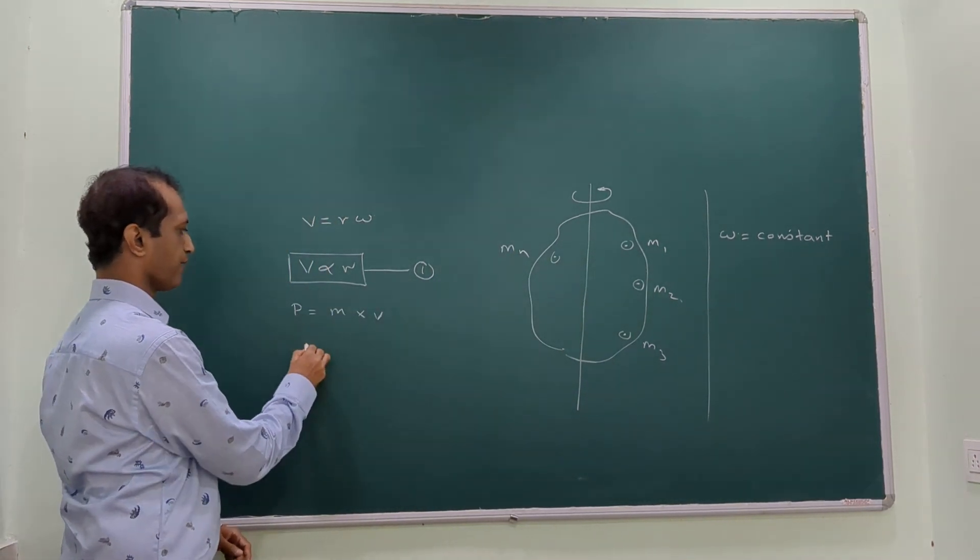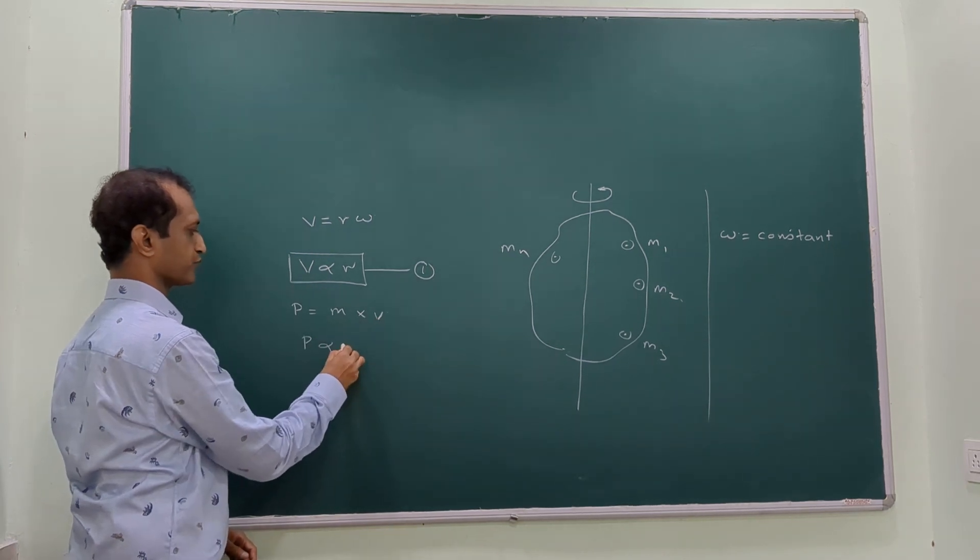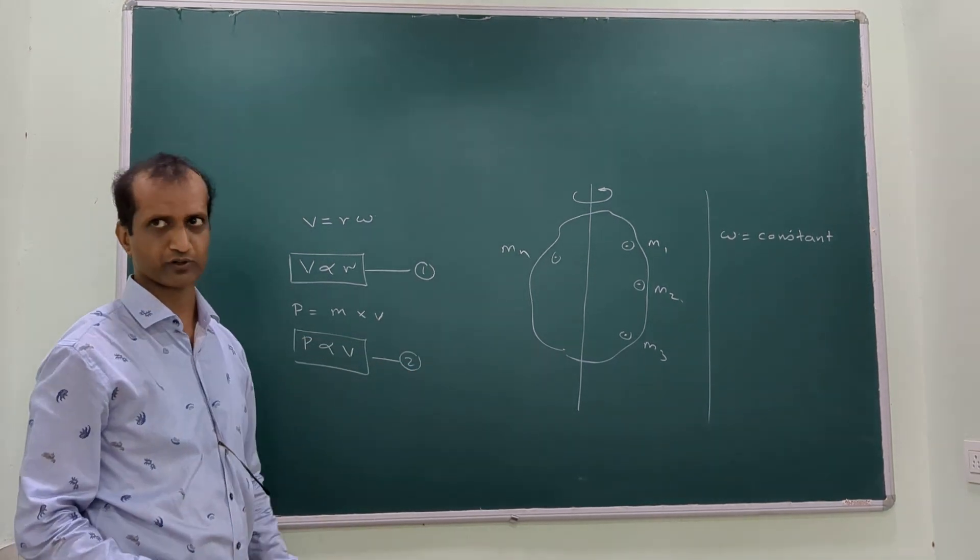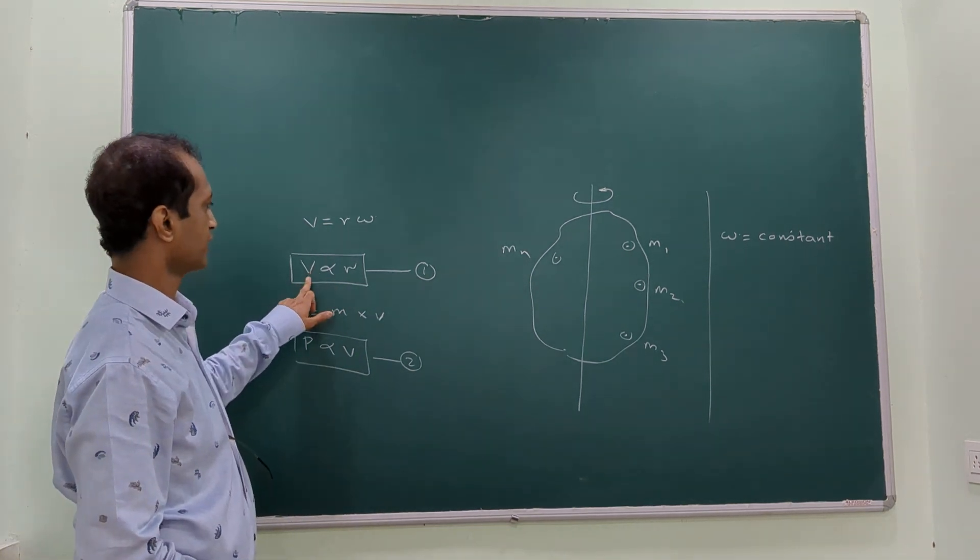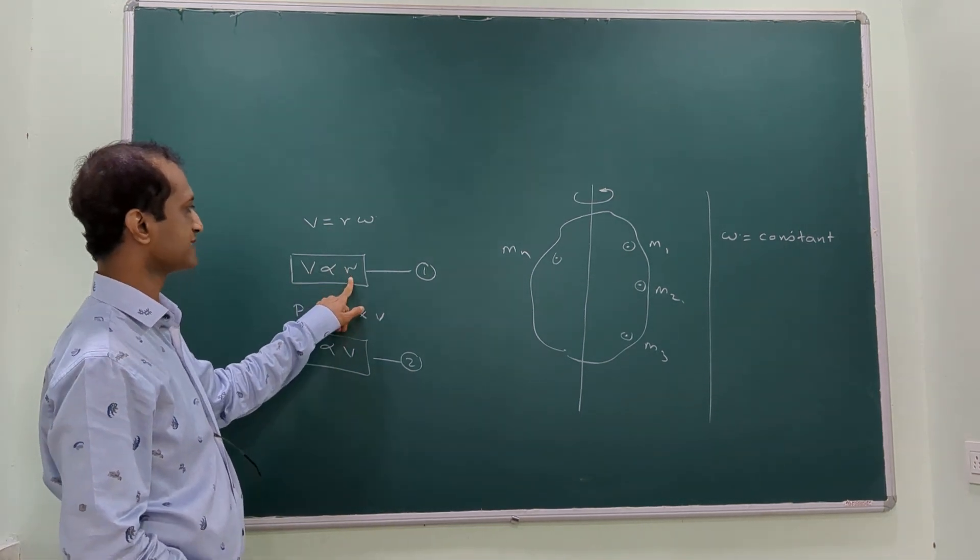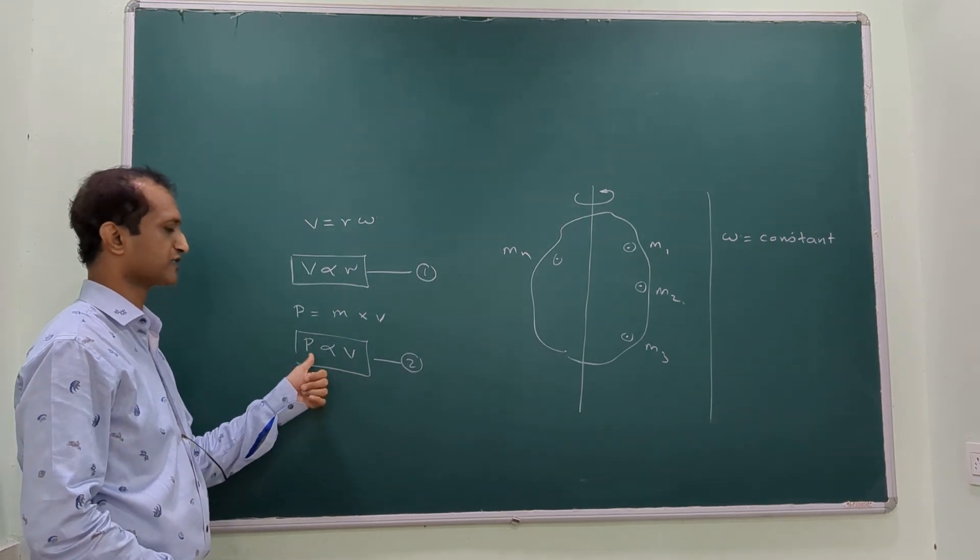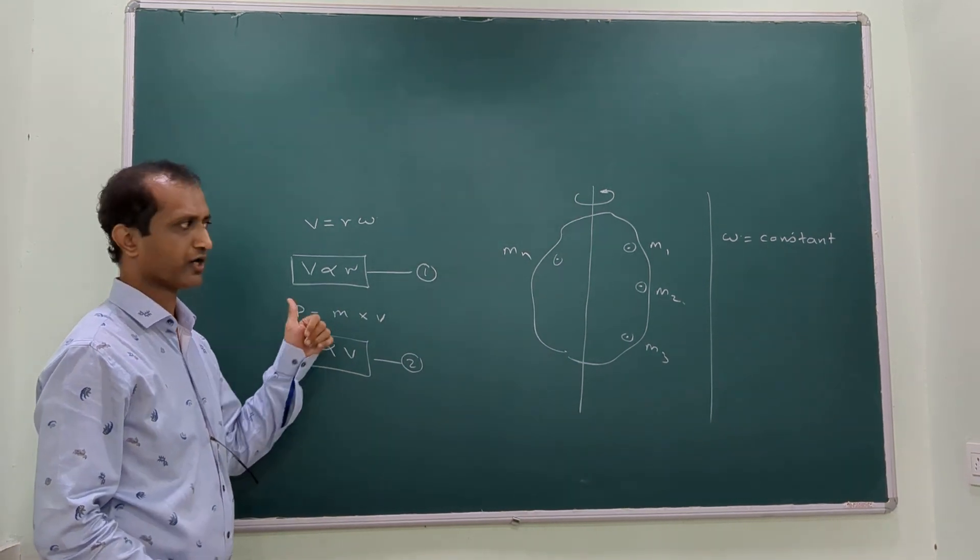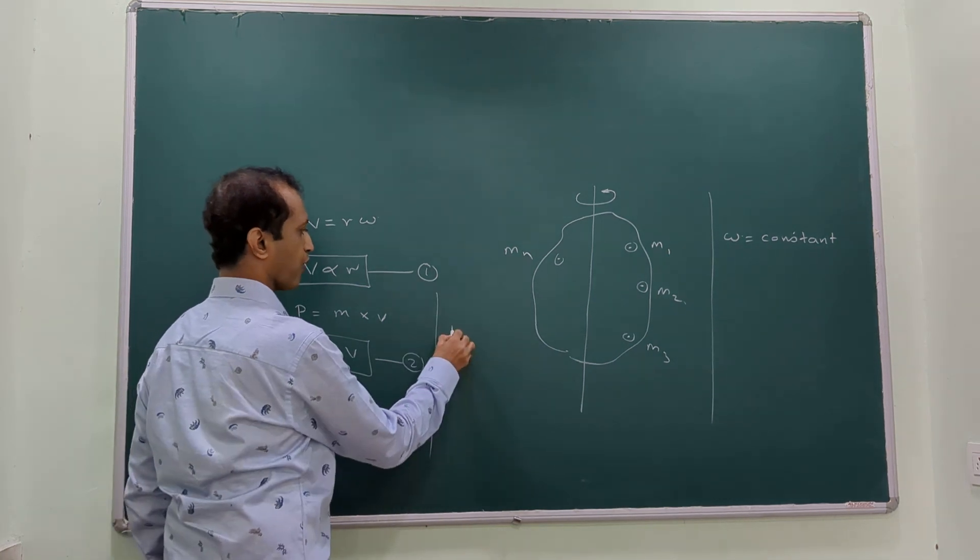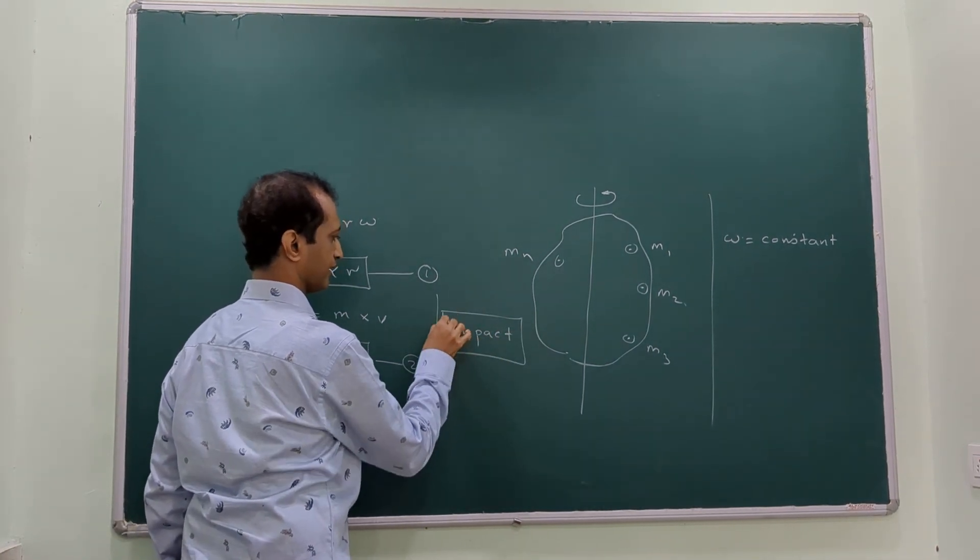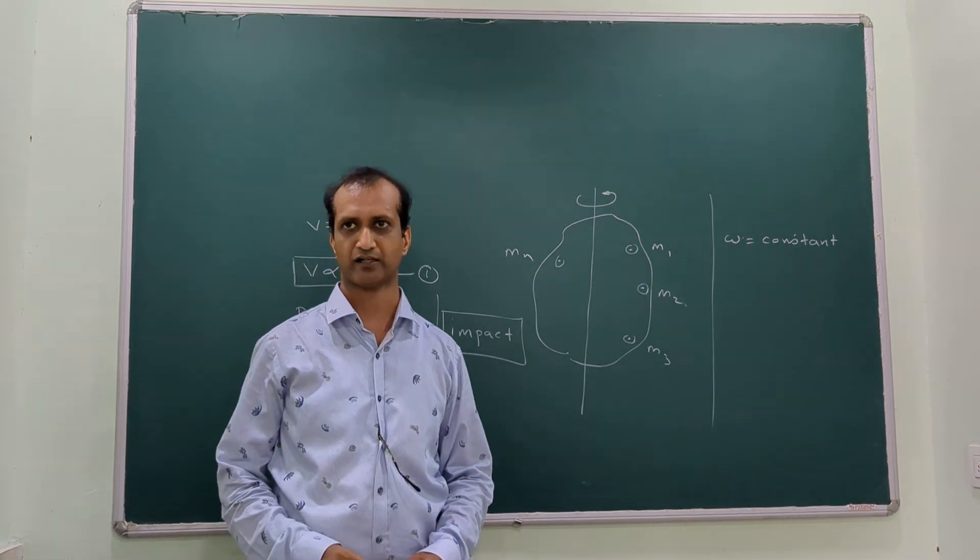So we get two very important equations. First, velocity depends on R: as R increases, V increases. Second, as V increases, momentum also increases. When the momentum increases, what increases is the effect of impact. Now let us see how.